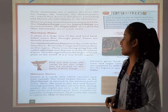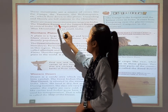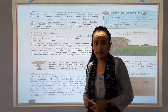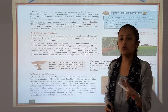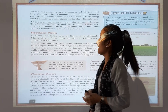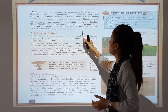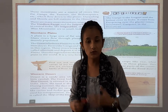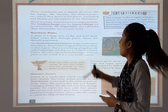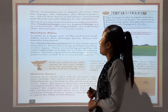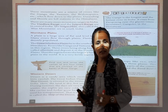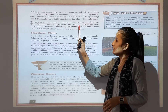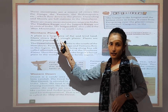Now there are many more mountain ranges in India. The Vindhya range and the Satpura range are in central India. The Nilgiri hills are in South India and are also called the Blue Mountains.